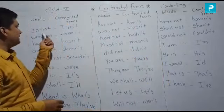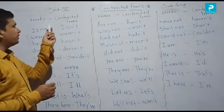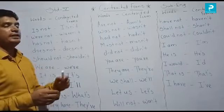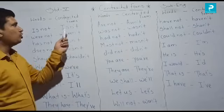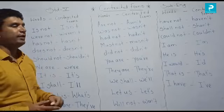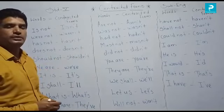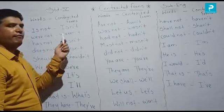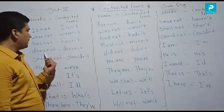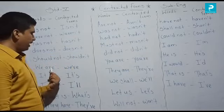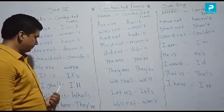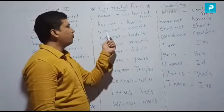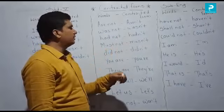On the board I have some words and their contracted forms. We will read all of them. Is not → isn't. Were not → weren't. Has not → hasn't. Does not → doesn't. Should not → shouldn't. We are → we're. It is → it's. I shall → I'll. What is → what's. They have → they've. Are not → aren't. Was not → wasn't. Had not → hadn't. Must not → mustn't. Did not → didn't.